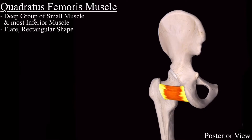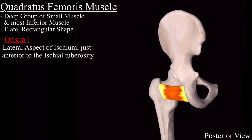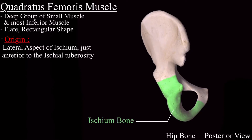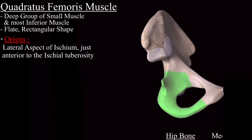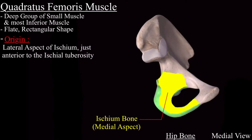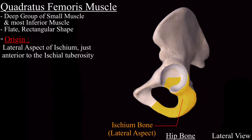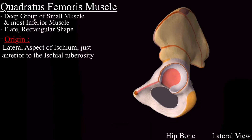It originates from the lateral aspect of the ischium, just inferior to the ischial tuberosity. This is the isolated hip bone in posterior view. The highlighted green is the ischium part — this is the medial aspect and this is the lateral aspect of the ischium bone.